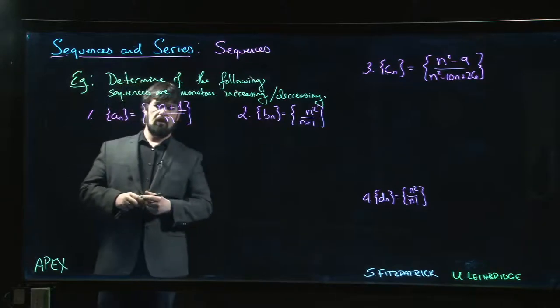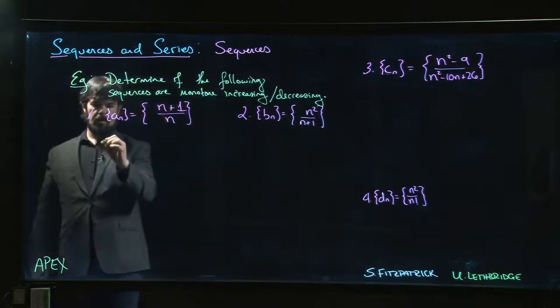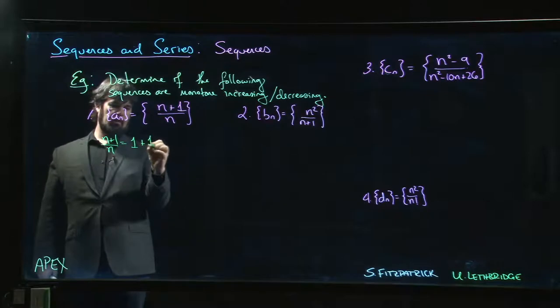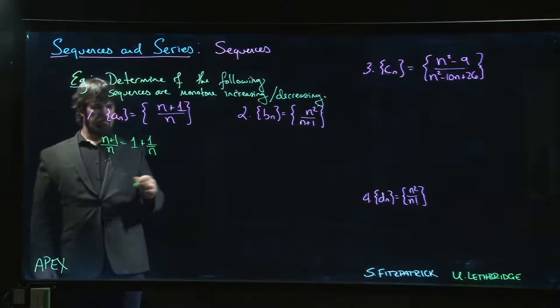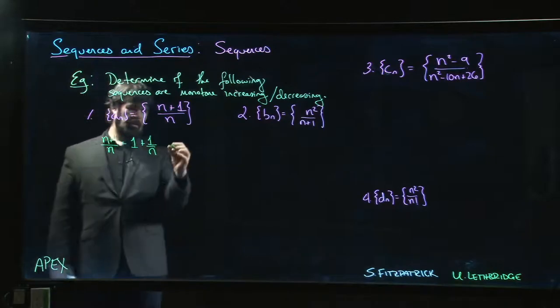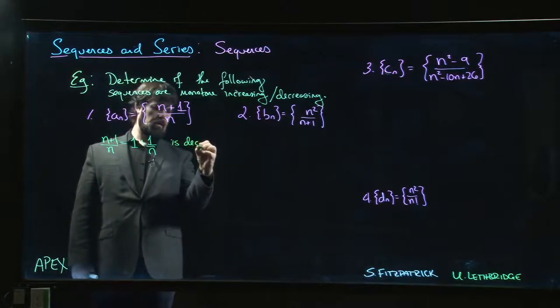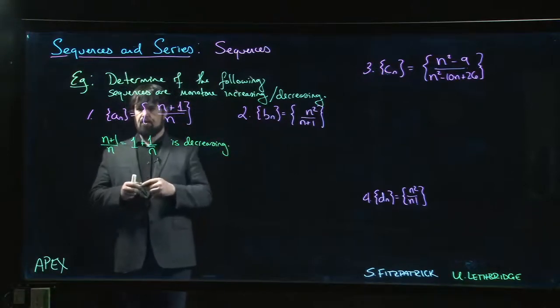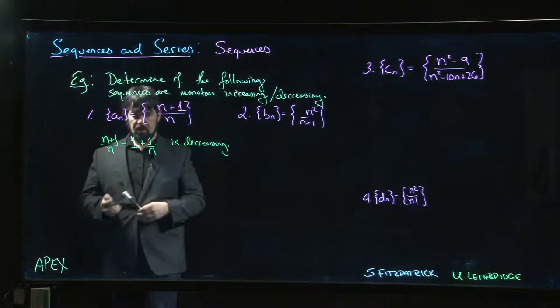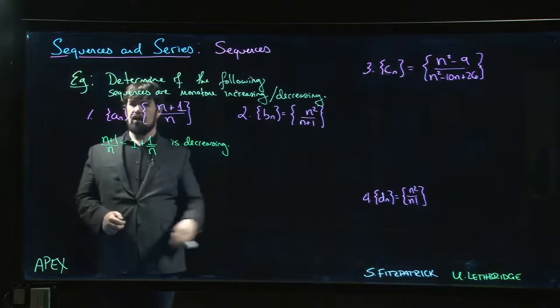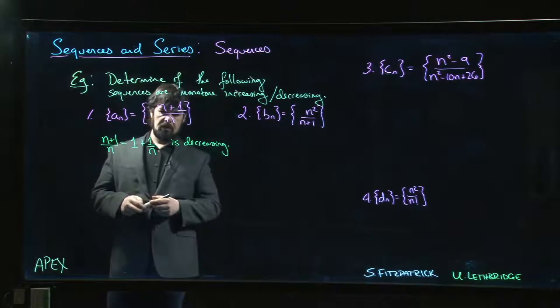So let's look at these. The first one is pretty straightforward. We might notice that n plus 1 over n can be written as 1 plus 1 over n, and it's also pretty clear that this is going to be decreasing. Because as n gets bigger, 1 over n gets smaller, and so this is going to be decreasing. Well, maybe that's not a very watertight argument. It's essentially appealing to the fact that these terms lie on the graph y is 1 over x. We know that that's decreasing, so we go with it.